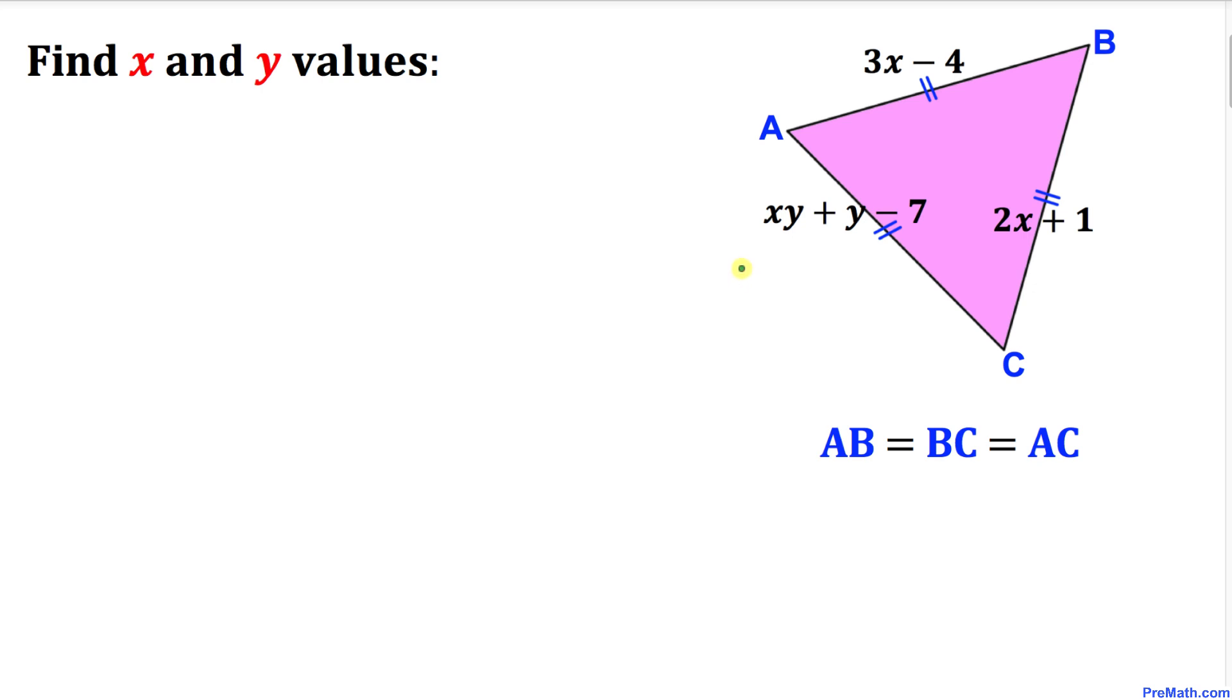Welcome to pre-math. In this video tutorial we have an equilateral triangle ABC. In other words, side length AB equals side length BC equals side length AC, and now we're going to calculate the x and y values.